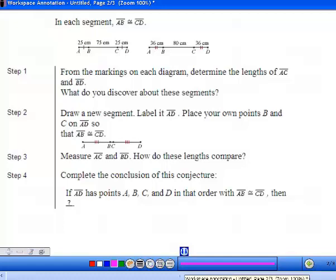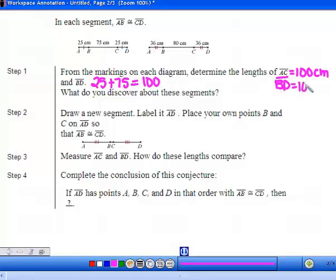From the markings on each diagram, determine the length of AC and BD. For the first figure, AC is 25 from A to B plus 75 from B to C, so AB plus BC equals 100 centimeters. For BD, B to C is 75 and C to D is 25, so 75 plus 25 is 100. BD is also 100 centimeters. What do we discover? They're equal.